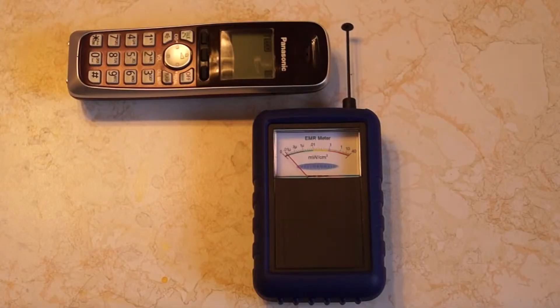This is a Panasonic DECT6 cordless phone. We're operating at 1.92 GHz in the microwave region. Maximum power is 115 milliwatts.